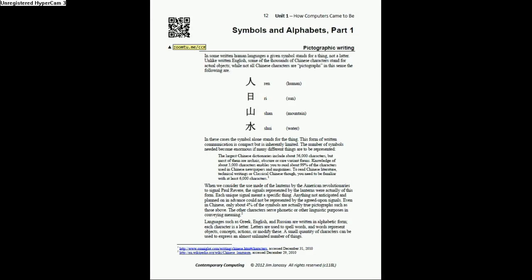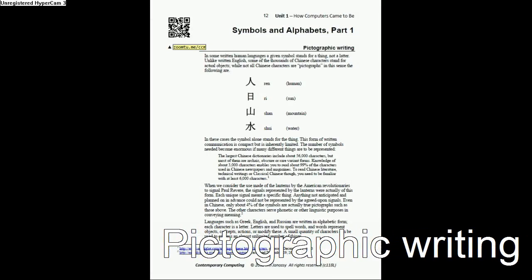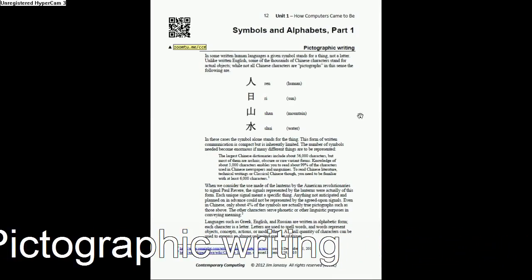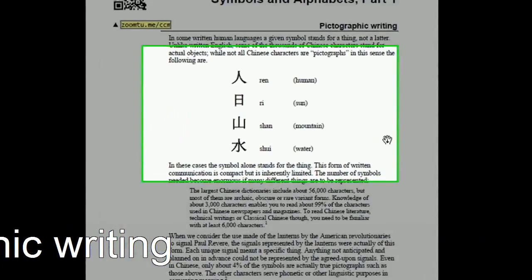The other use of symbols, as we looked at with the signals for Paul Revere, are called pictographic writing. The difference between this and alphabetic writing is shown right here in the middle of this screen.